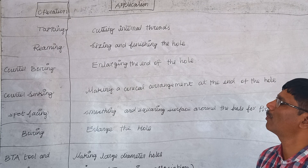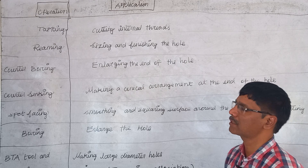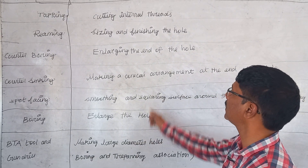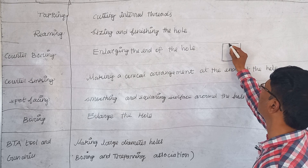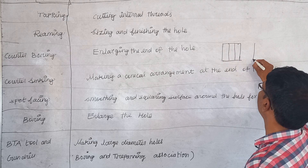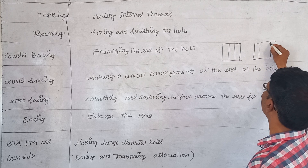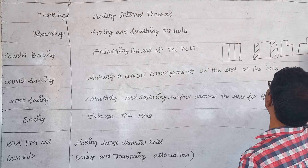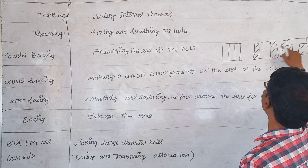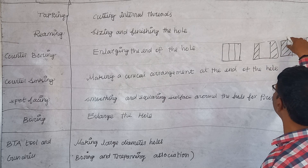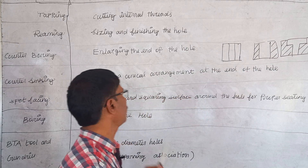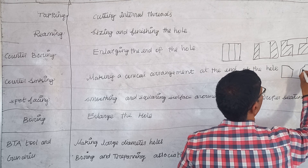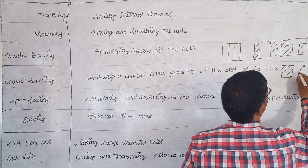Different hole-making operations include: tapping, which is cutting internal threads; reaming, which achieves sizing and finishing of the hole; counter boring, which enlarges the end of the hole to a certain extent; boring, which enlarges the hole for its entire extent; and counter sinking, which means enlarging the hole conically up to a certain extent.